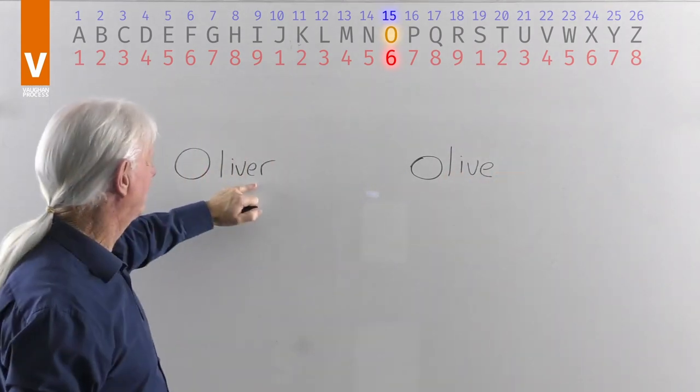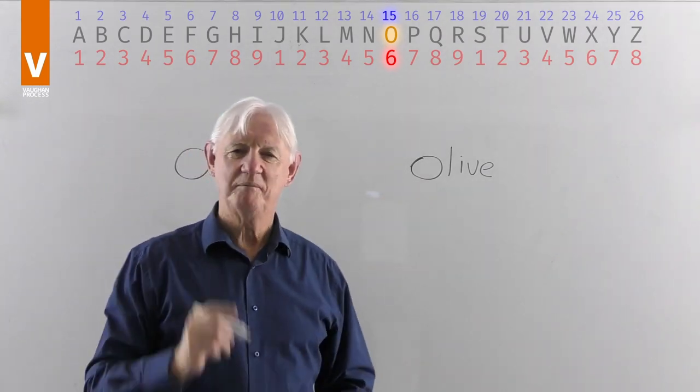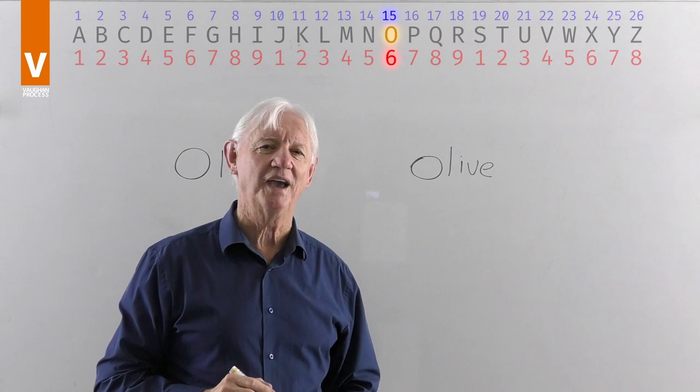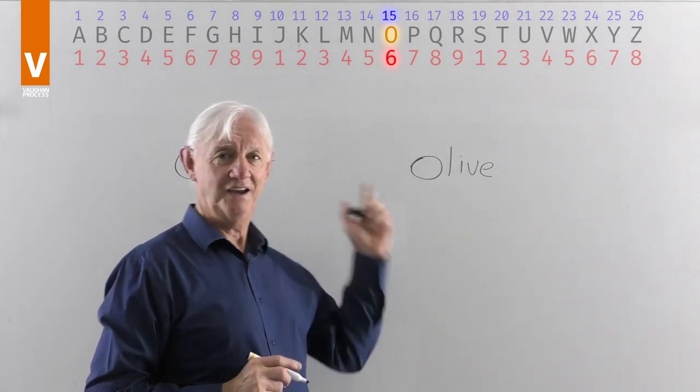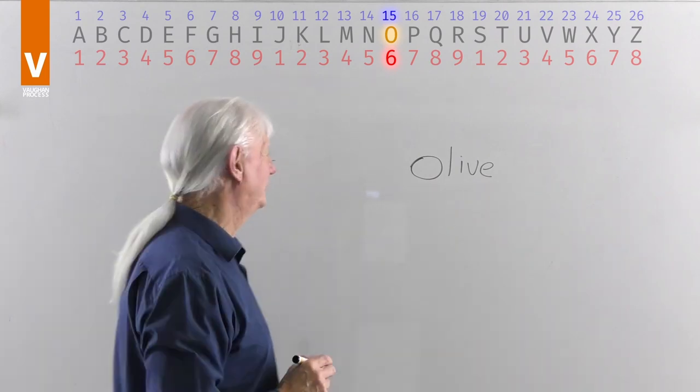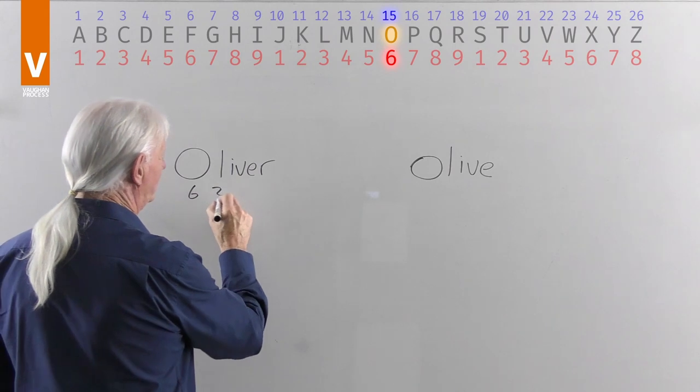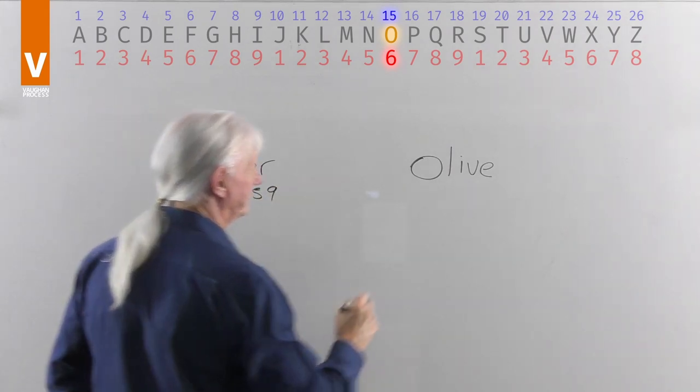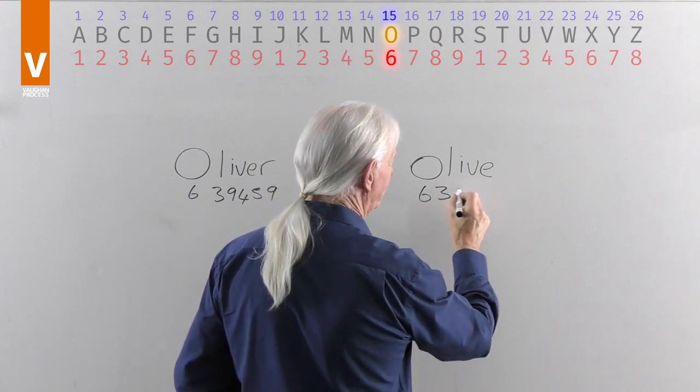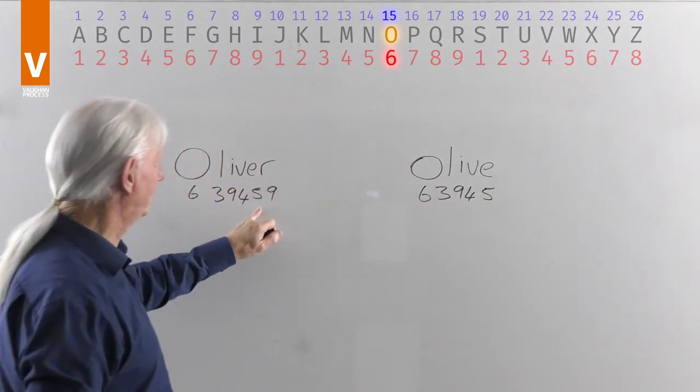Now Olive and Oliver for the male. I put that in to see what we can look at as being the differences with the addition of the letter R in Oliver as opposed to Olive. Let's see what happens. 6-3-9-4-5-9. 6-3-9-4-5. We've got up to there and there's the extra one.